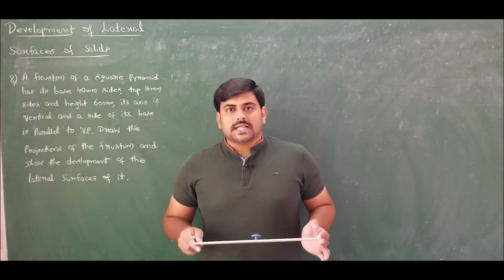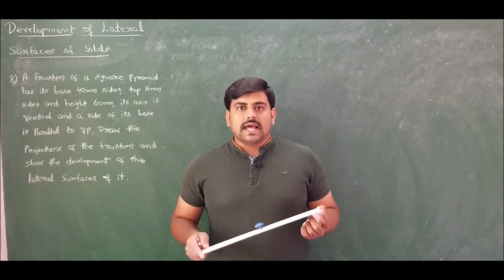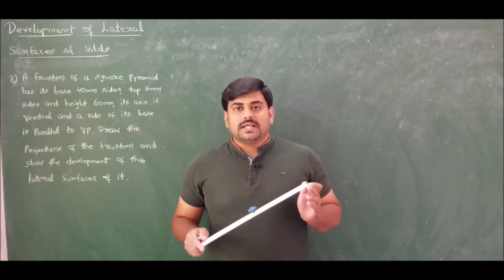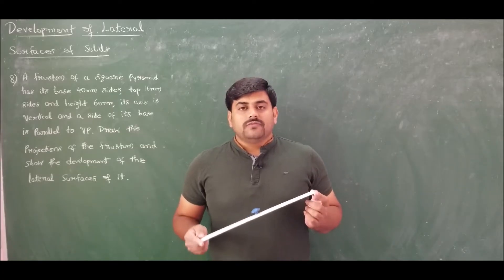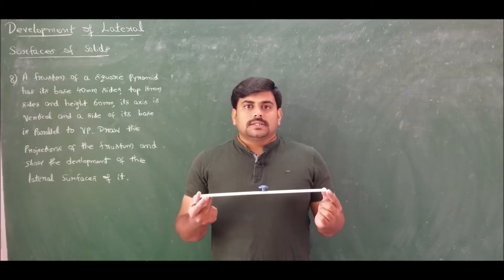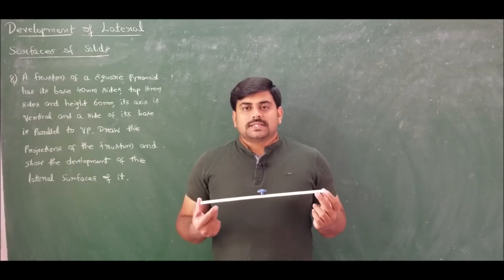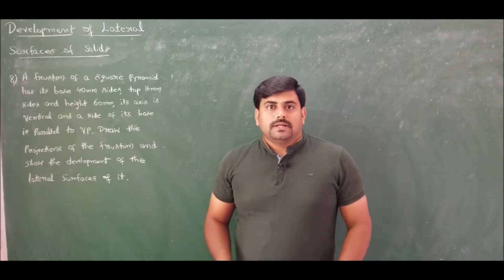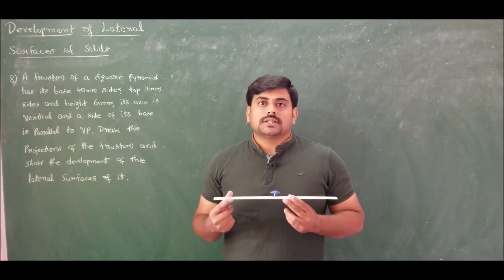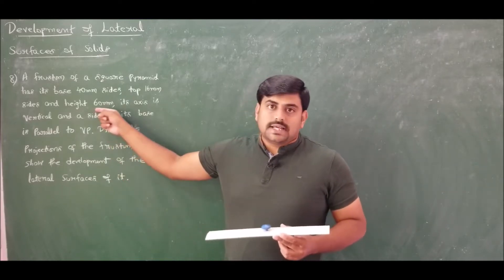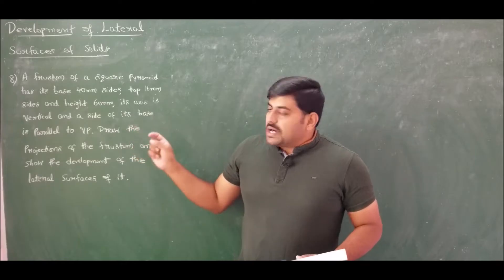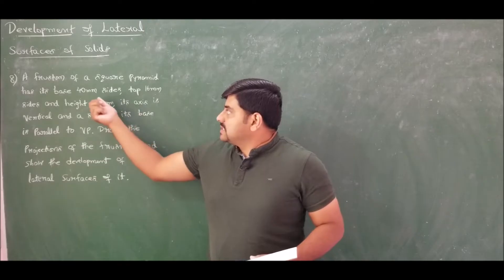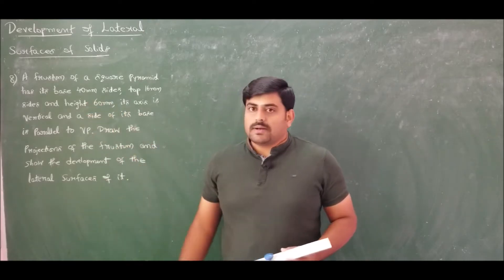If the cutting plane is inclined at a certain angle to the base or to the horizontal plane, then the section obtained is termed truncation. If the cutting plane is parallel to the base, then the section obtained is termed a frustum. Here the problem clearly states we have a frustum of a square pyramid, so the cutting plane is parallel to the horizontal plane at a height of 60 mm. At the bottom we get a square of 40 mm, and at the top we get a square of 16 mm.